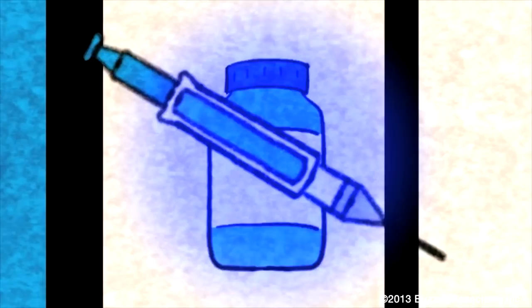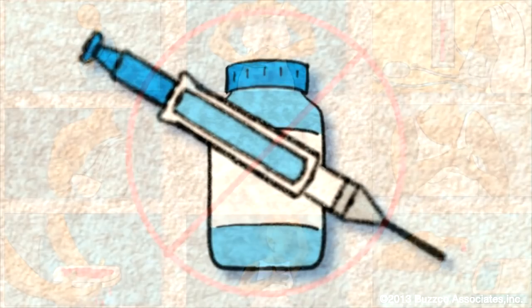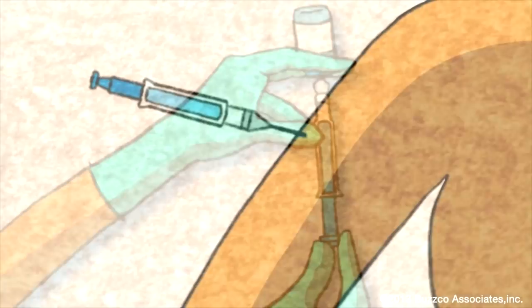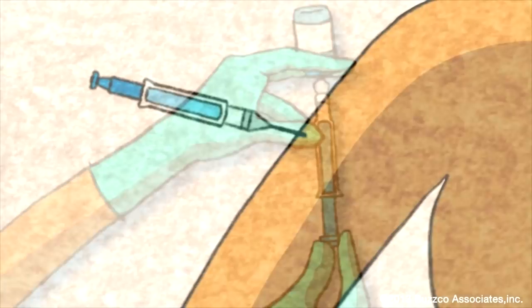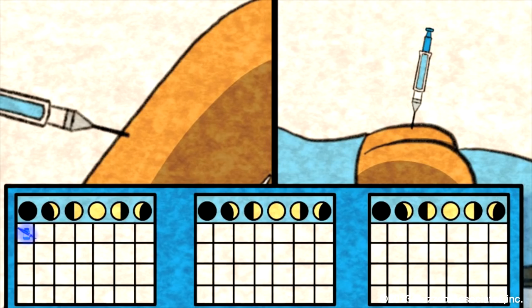Depo is administered by injections every three months. You must be trained in how and where to inject this medication safely. Depo is injected into the muscles of the arm or buttocks every three months. The first injection should be given during the first five days of the woman's monthly period to ensure she is not pregnant.